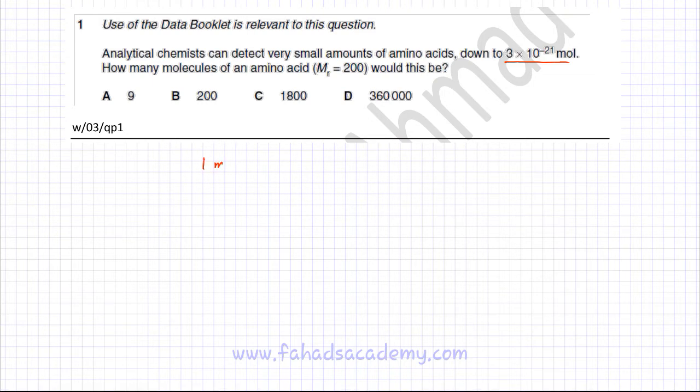We know that one mole of a substance means you have 6.02 × 10^23 particles. So if you have one mole of amino acid, that would be equal to 6.02 × 10^23 particles of that amino acid. In this question you have 3 × 10^-21 moles.